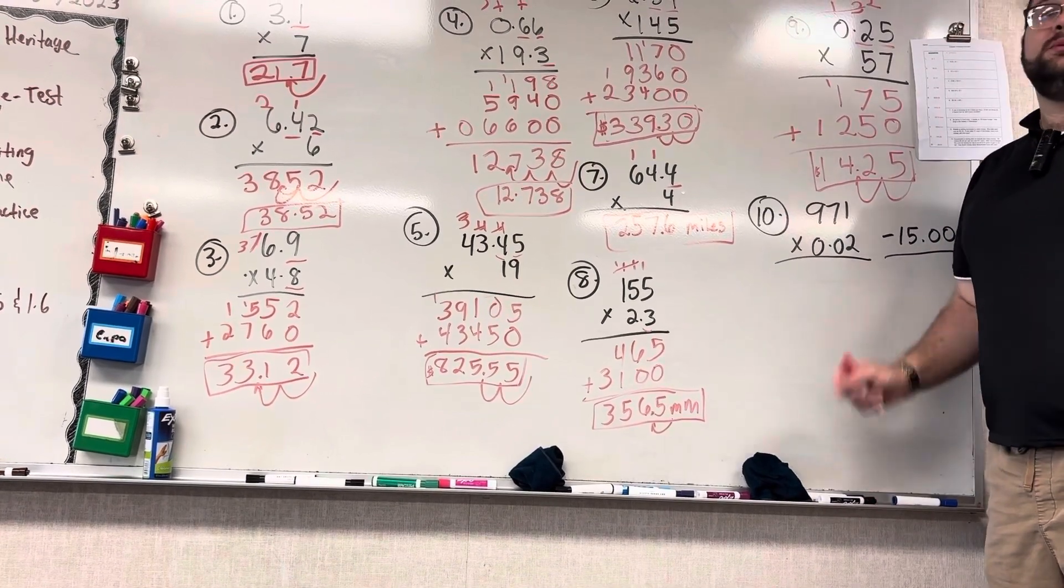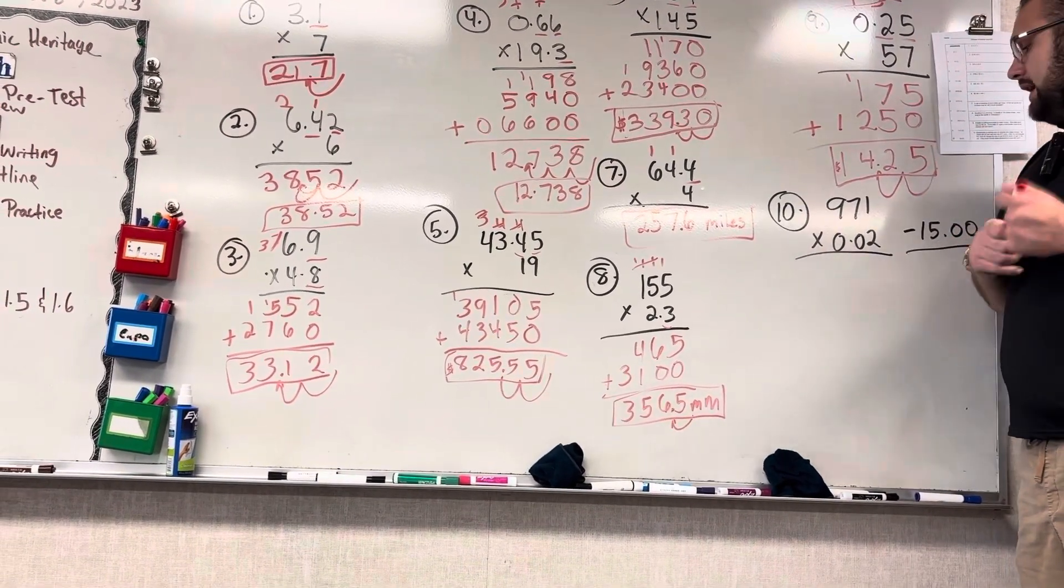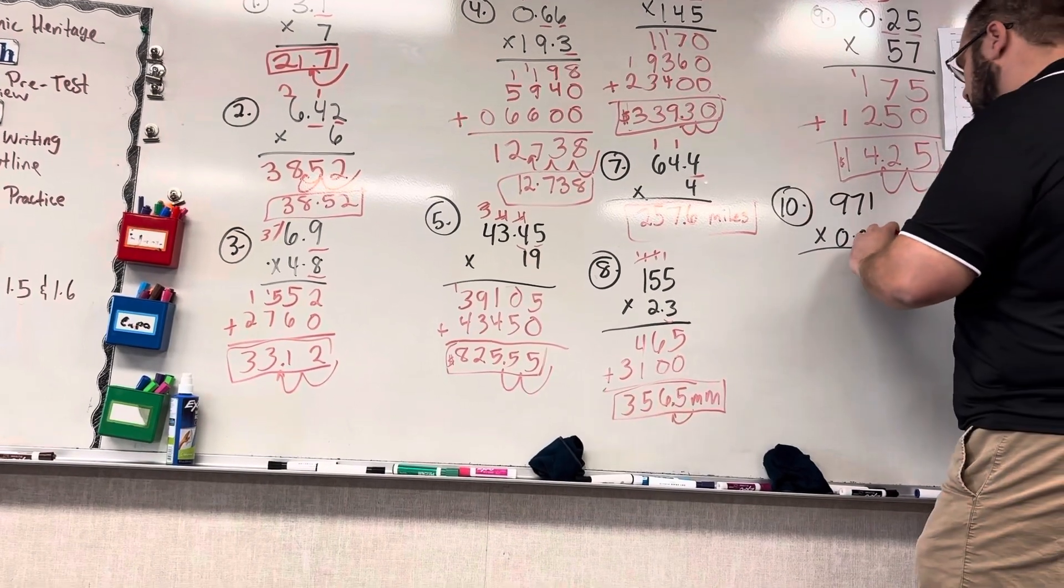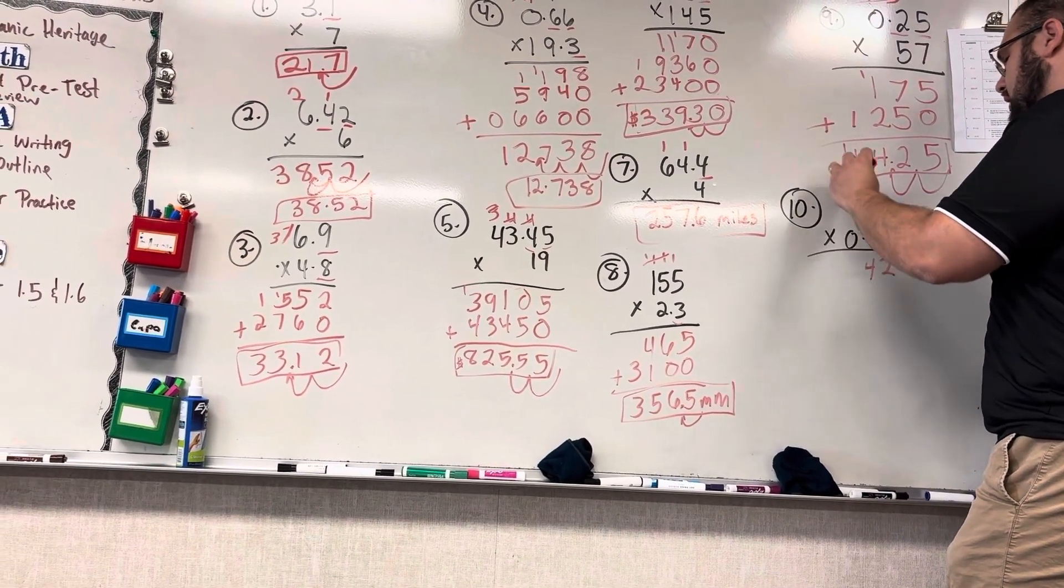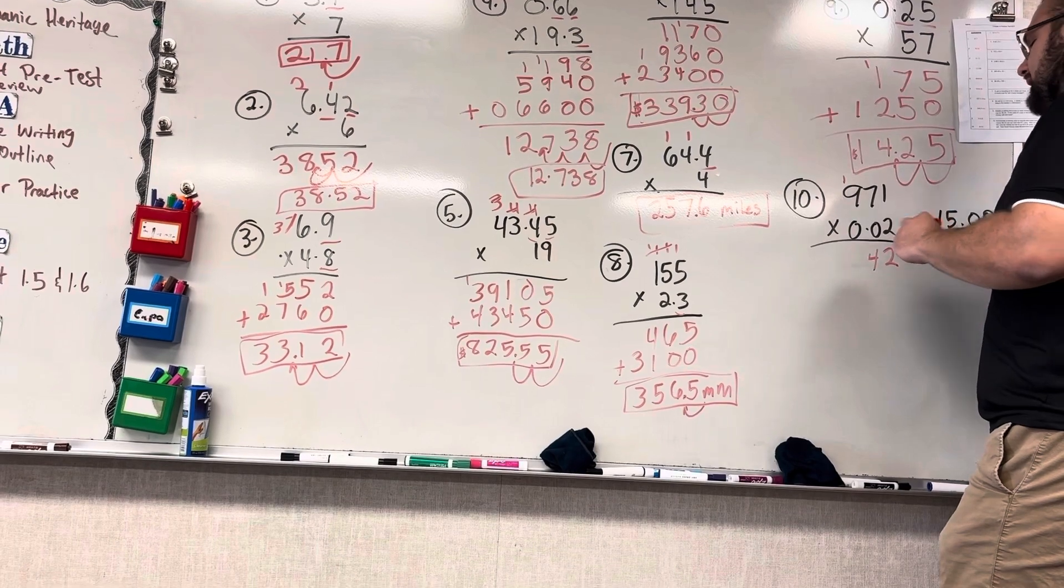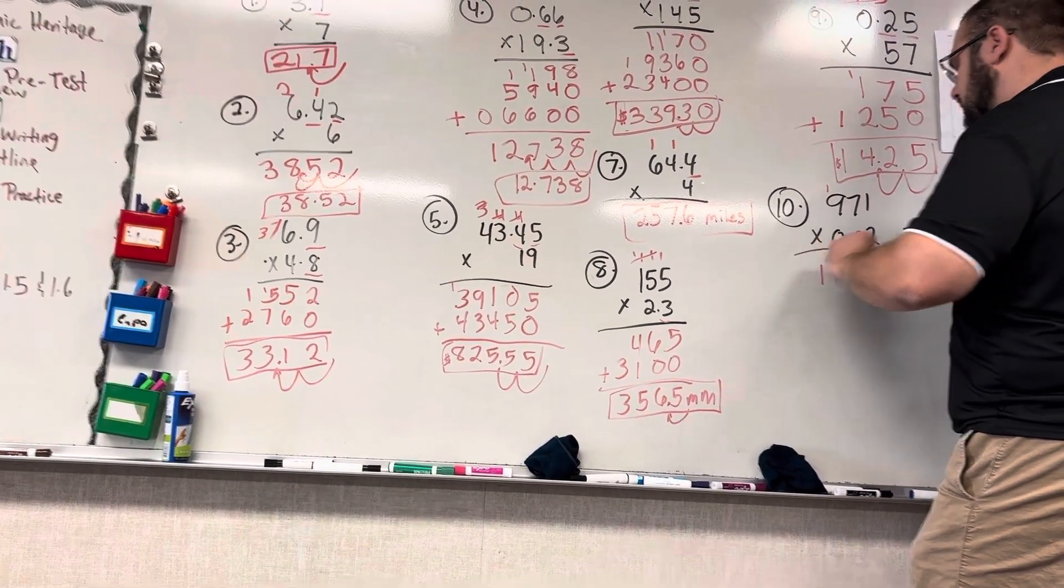So let's do this first part. It's a lot simpler than it looks, actually. 2 times 1 is 2. 2 times 7 is 14, carry the 1. 2 times 9 is 18, plus 1 is 19.